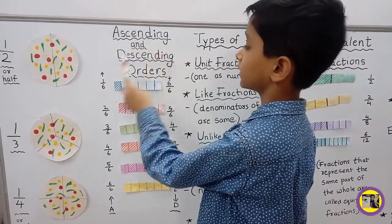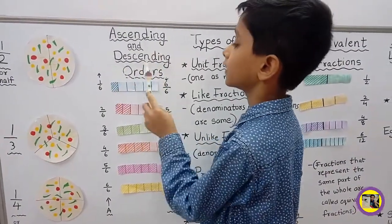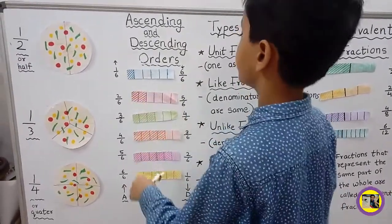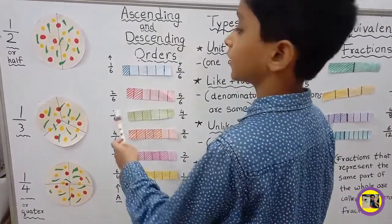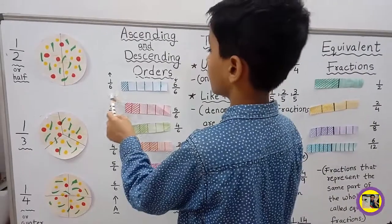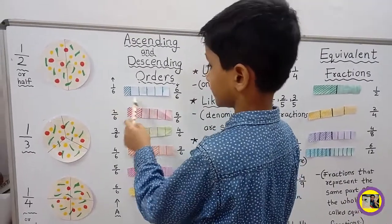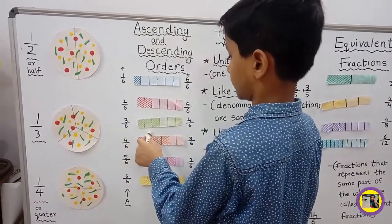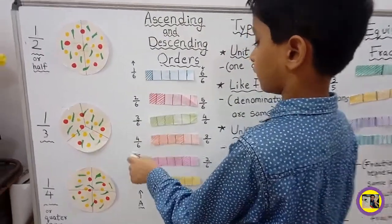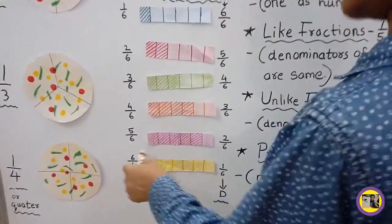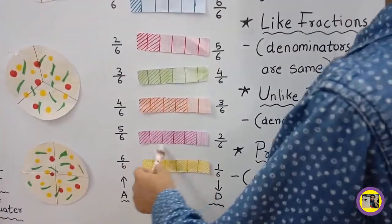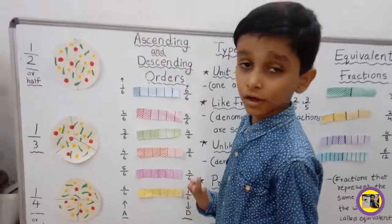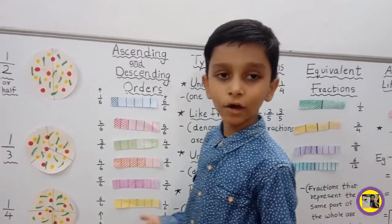This is ascending and descending order. Now this is arranged in ascending order: 1 upon 6, 2 upon 6, 3 upon 6, 4 upon 6, 5 upon 6, and 6 upon 6.